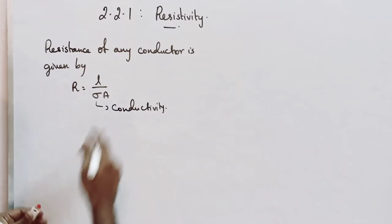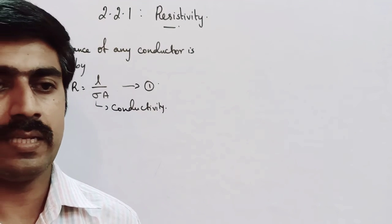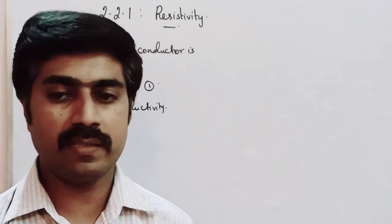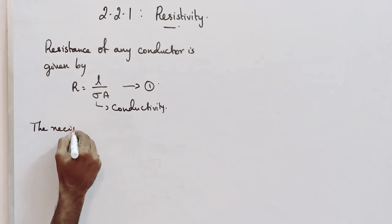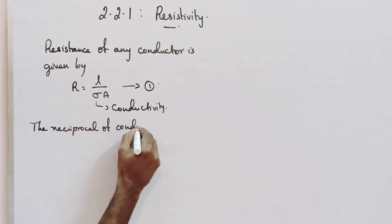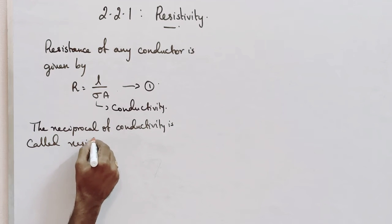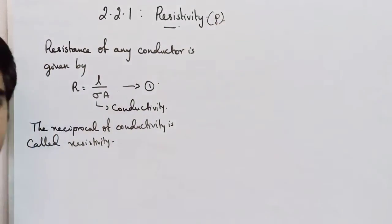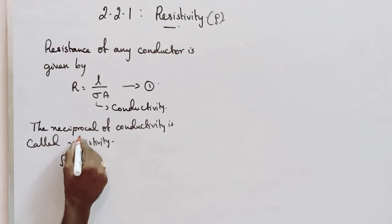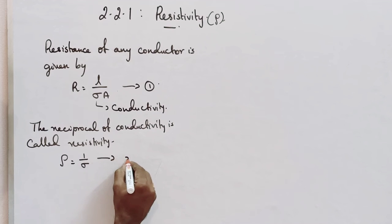One more important point: the reciprocal of conductivity is called resistivity. This was introduced in the microscopic model of electric currents topic. Resistivity is denoted by the letter rho, so rho equals one over sigma — the reciprocal of conductivity sigma. This is equation number two.